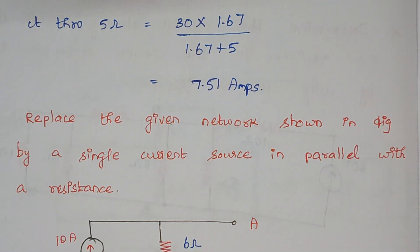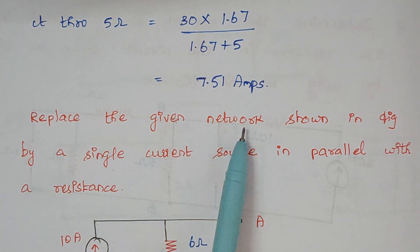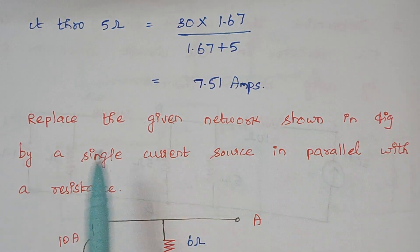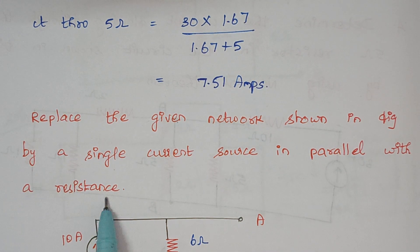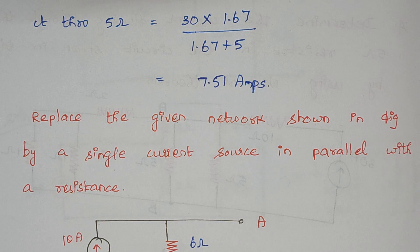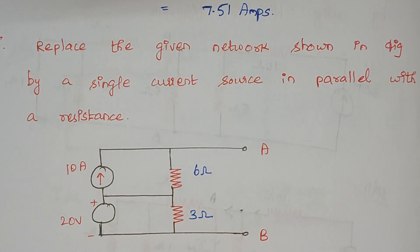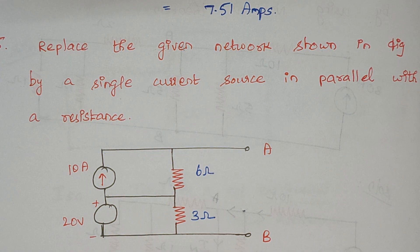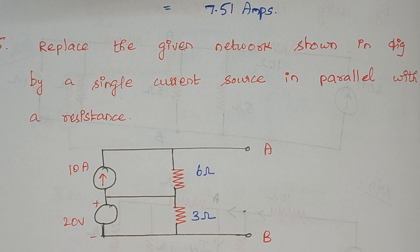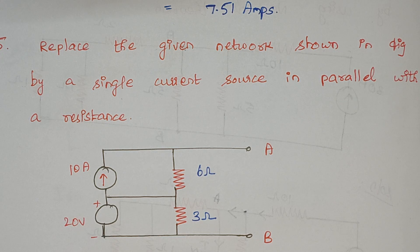This problem is a bit different. The problem states: replace the given network shown in the figure by a single current source in parallel with the resistance. It is indirectly asking for Norton's equivalent circuit, because a single current source in parallel with the resistance is nothing but our Norton's equivalent circuit. In this given circuit we have both a current source and a voltage source, so we are going to use both the superposition theorem and Norton's theorem to solve this circuit.